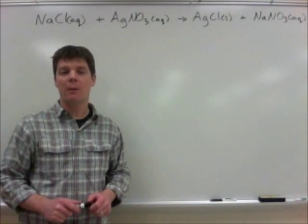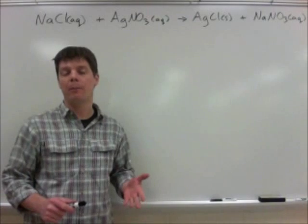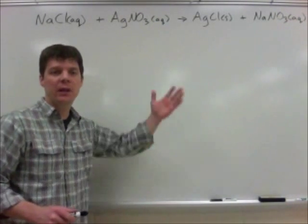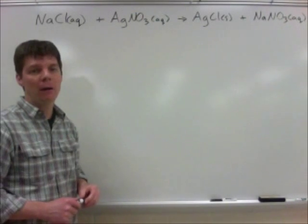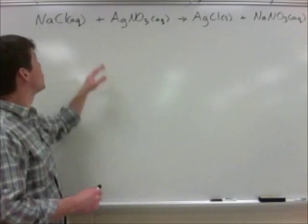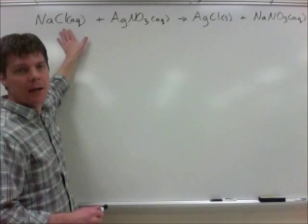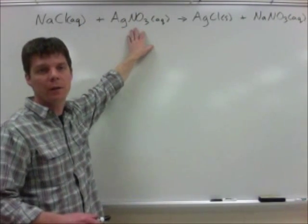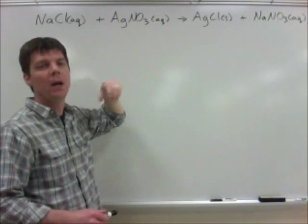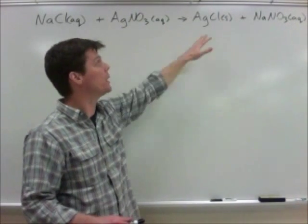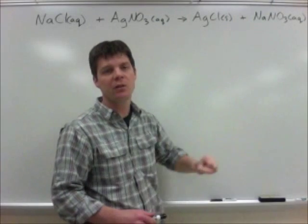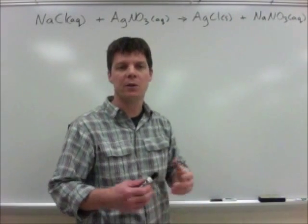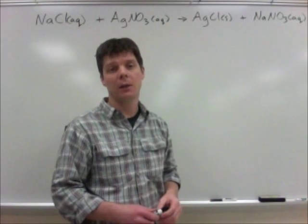Our first step in solving any stoichiometry problem is to make sure that we have a balanced chemical equation to describe the reaction. We have sodium chloride in the aqueous state — that means it's dissolved in water — which is going to be reacting with aqueous silver nitrate. The products of this reaction are going to be a precipitate, silver chloride, and we are also going to form sodium nitrate, which is still going to remain dissolved in the water.